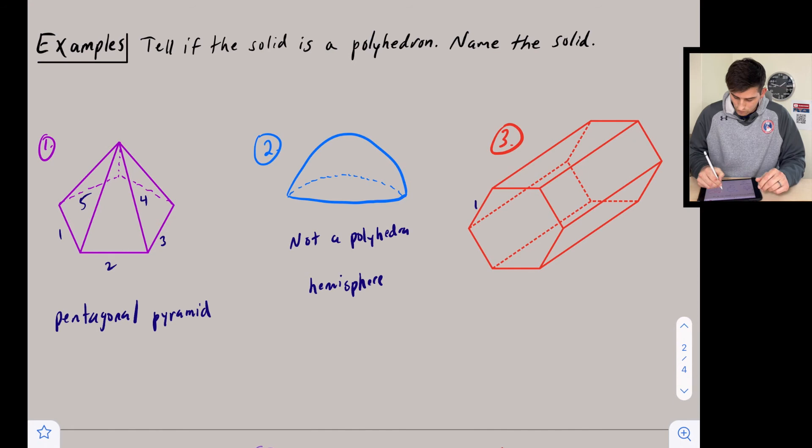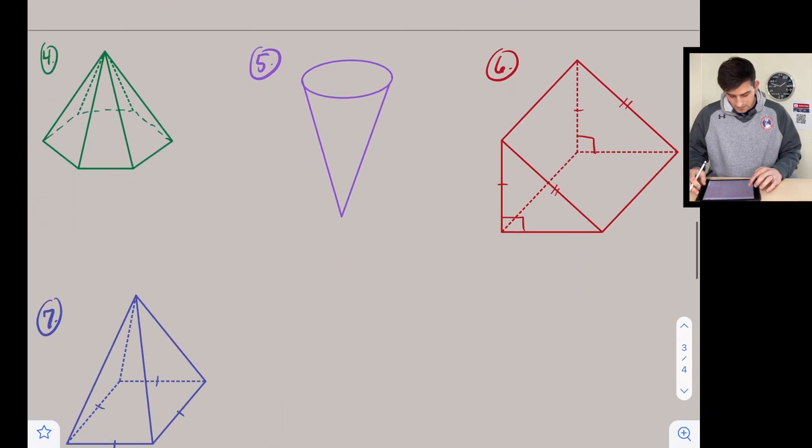Number three: we have one, two, three, four, five, six sides, so this would be hexagonal. Notice how it's almost shaped like a box—so this one is a prism. It's a hexagonal prism.